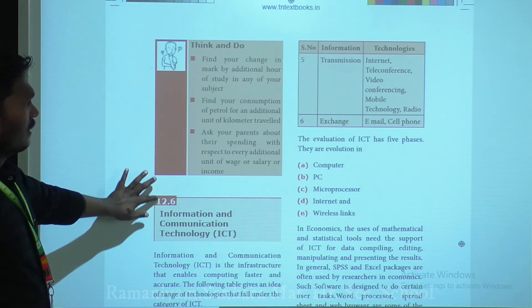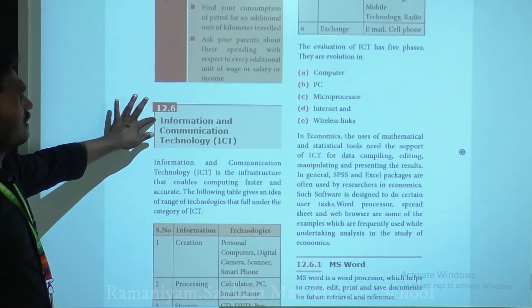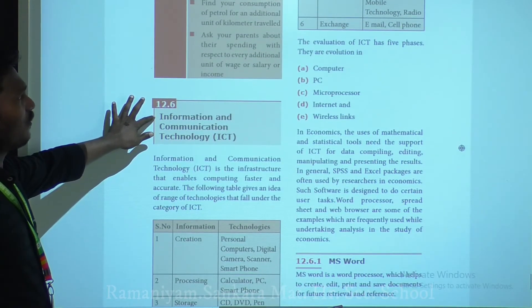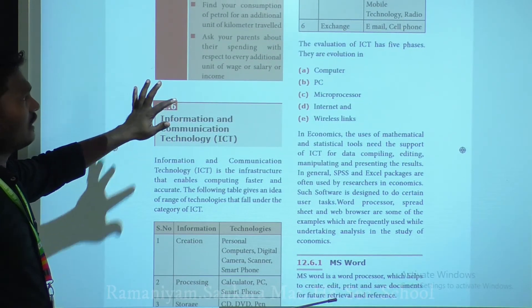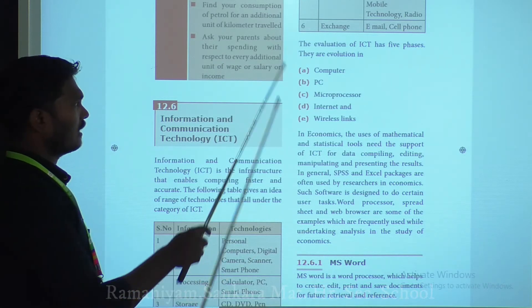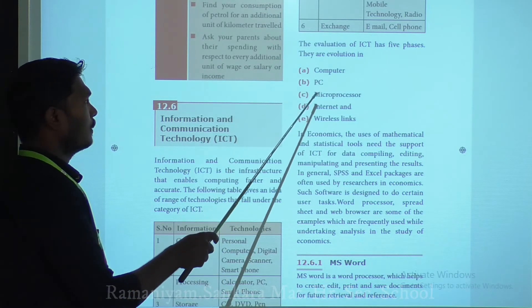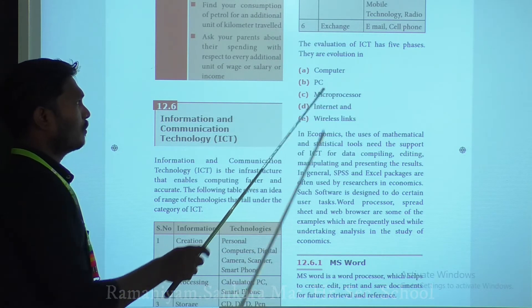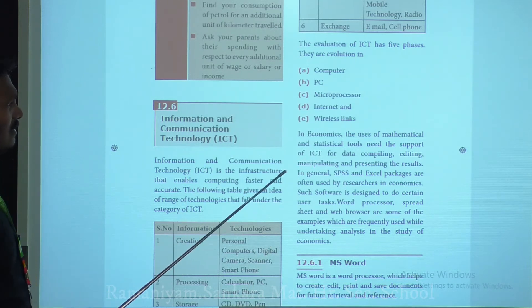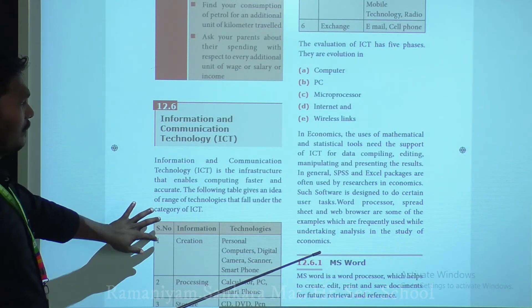The evolution of ICT has five phases. They are: computer, PC, microprocessors, internet, and wireless link.